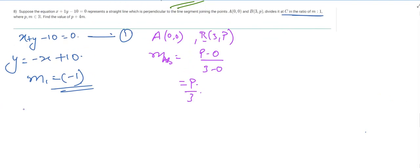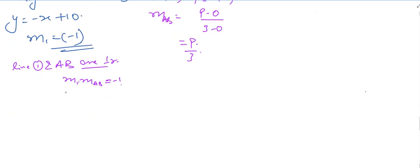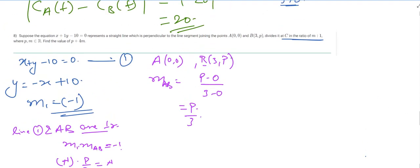Since line 1 and AB are perpendicular, m1 multiplied by the slope of AB equals minus 1. So minus 1 times p over 3 equals minus 1. The minus signs cancel, giving us p equals 3.